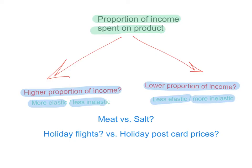Let's compare meat and salt, for example. Meat generally takes a much higher proportion of income than salt — salt is quite cheap. So consumers are likely to be more sensitive to changes in the price of meat than to changes in the price of salt. Similarly, the prices of flights for holidays eat up a big proportion of your holiday budget, so your demand is likely to be more elastic for holiday flights. That's why airlines advertise discounts in holiday season — they know consumers are responsive to a drop in price.